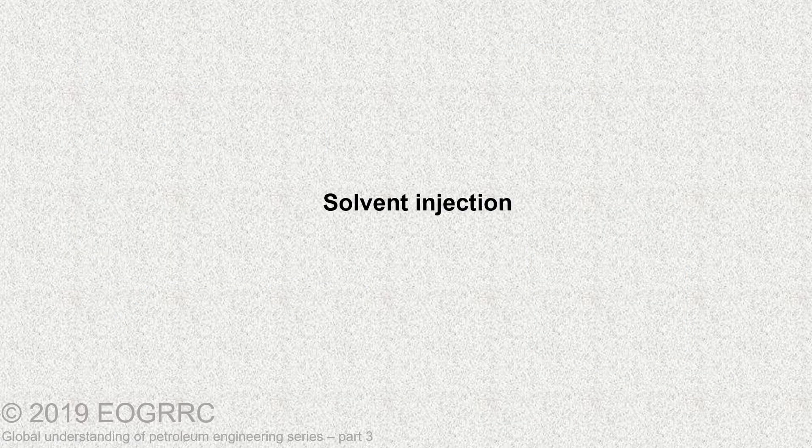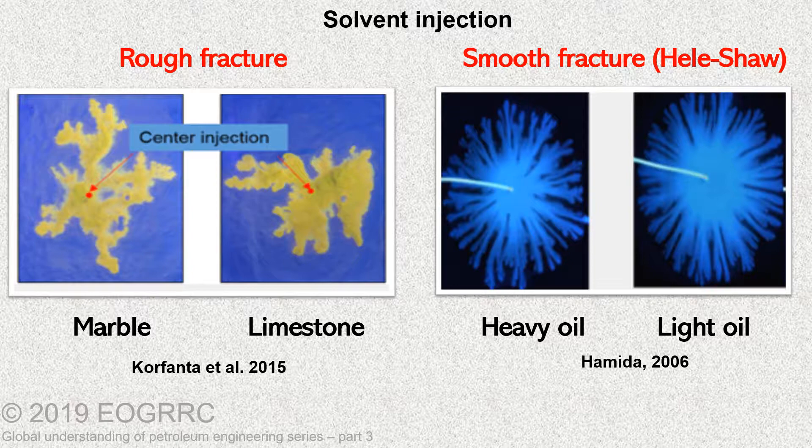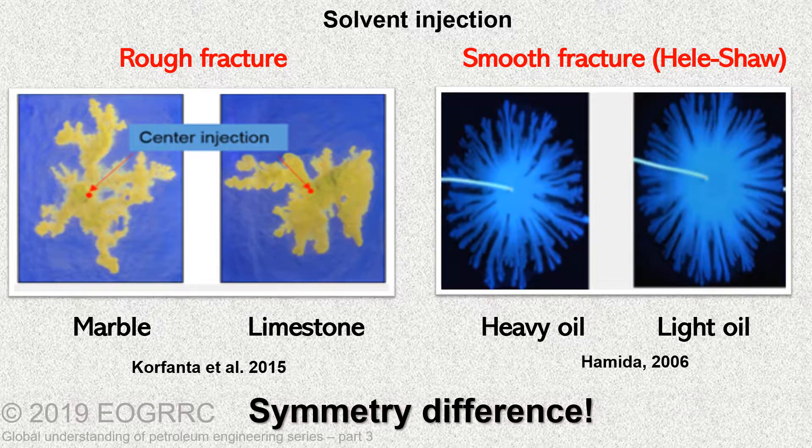In 2015, Carfanta et al. conducted decane injection into heavy mineral oil saturated marble and limestone fractures. And previously in 2006, Hamida injected kerosene into the smooth Hele-Shaw sample for both heavy oil and light mineral oil cases. A side-by-side comparison of the center injection visualization models of rough fracture and smooth fracture shows the distinct symmetry difference caused by the fracture surface roughness.